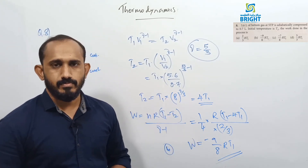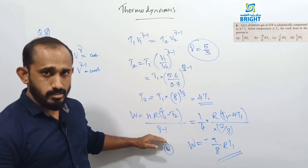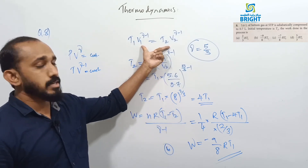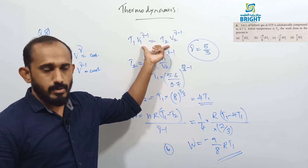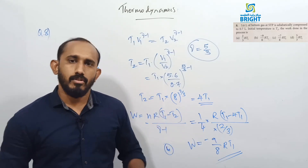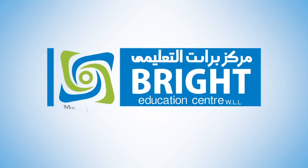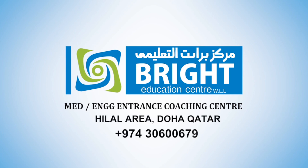In this adiabatic process example, we first found T2 using the TV^(γ−1) = constant relation, then substituted into the work done formula. I hope you understood it. Prepare well for your exams. Thank you for watching. This is Right Education Center, medical and engineering entrance coaching center.